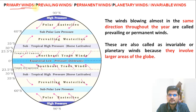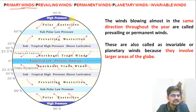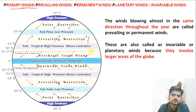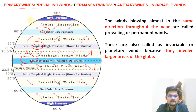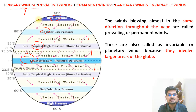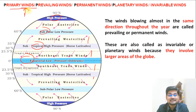Now after we have learned about the various temperature and pressure belts, atmospheric circulation, and atmospheric stability and instability on the entire earth, let's understand the movement of winds across these pressure belts. There are seven different pressure belts on the earth — three on each side and one at the center. Wind movement is triggered because of the difference in pressures across these belts.